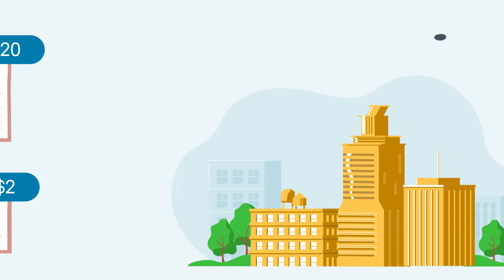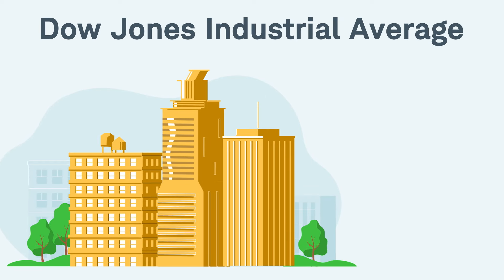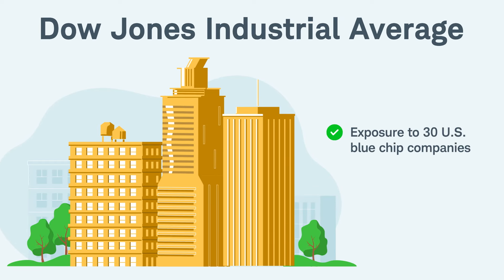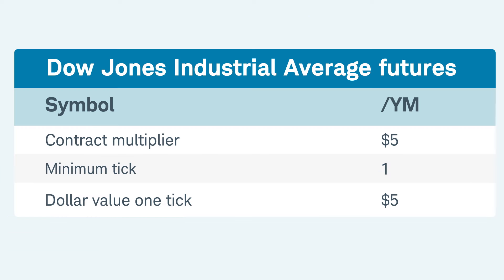Next up is the Micro E-mini Dow. This contract gives traders exposure to 30 U.S. blue chip companies. Symbol /MYM, this contract has a multiplier of $0.50 and a minimum tick value of one point. This means the dollar value for one tick is also equal to its per tick value of $0.50.